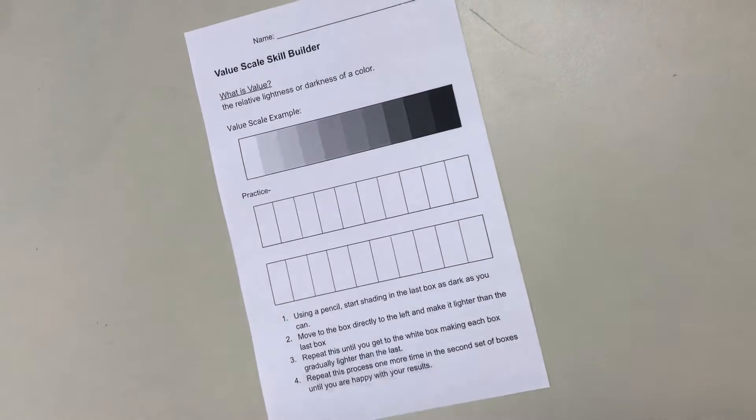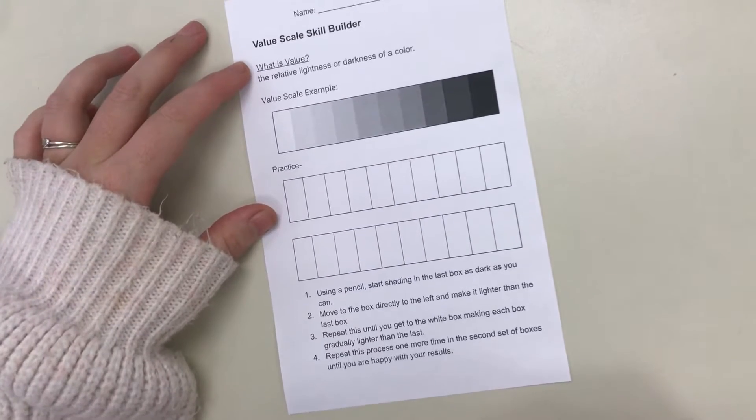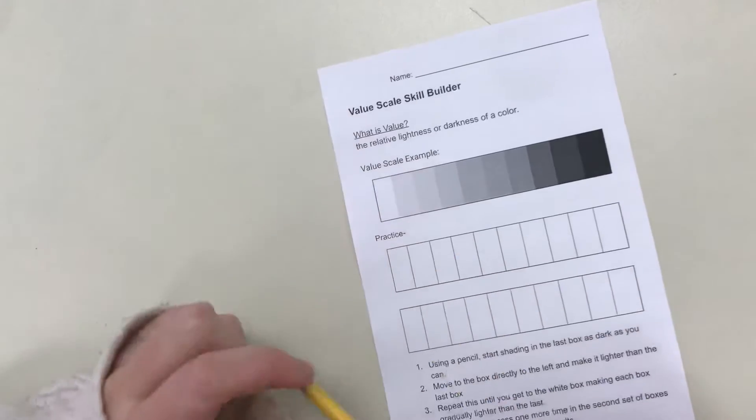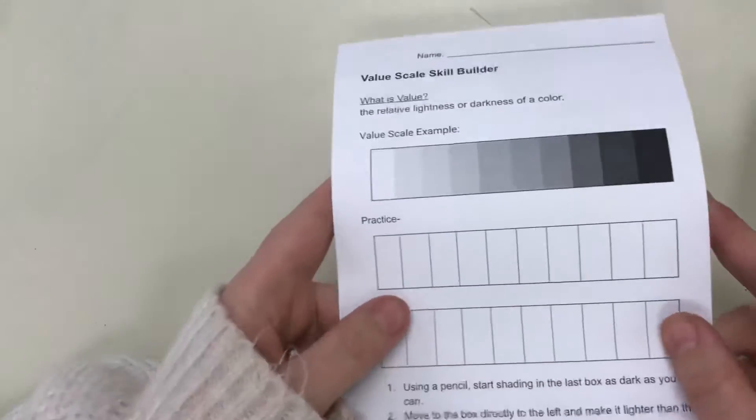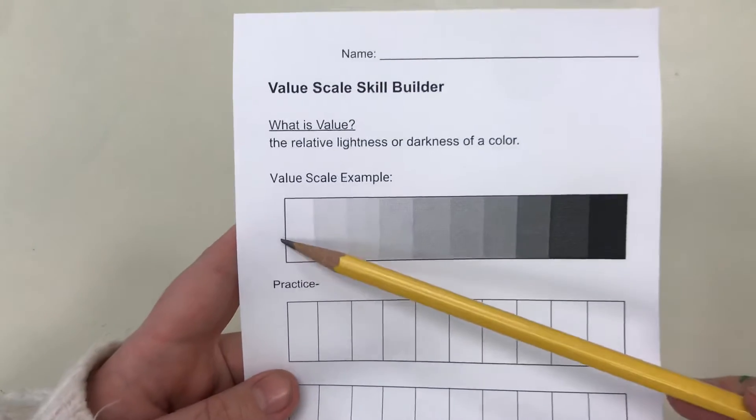In this video I'm going to show you how to fill out and make your own value scale. To start off we need to know what value is, which is the relative lightness or darkness in a color. This is an example of a value scale going from the darkest to the lightest.